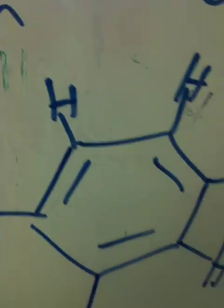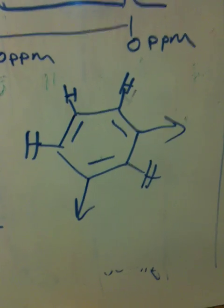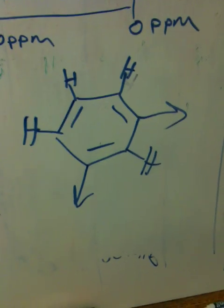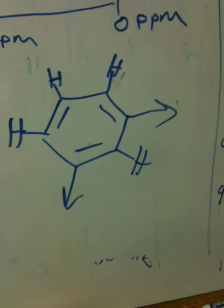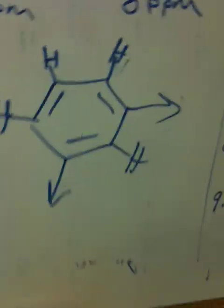Another option is this. With the substituents here and here. Would that give two doublets? I want you to think about that. How many different types of hydrogens do you have?